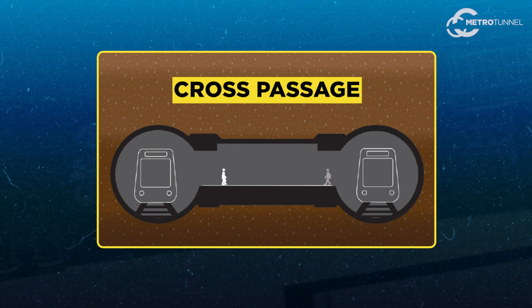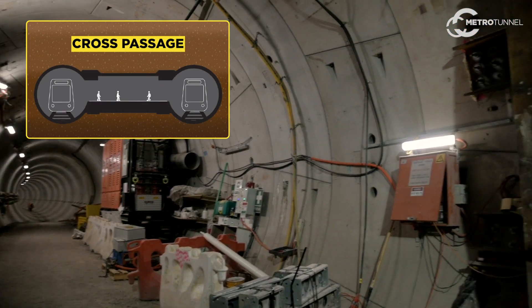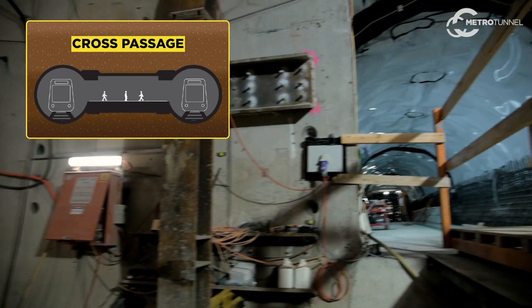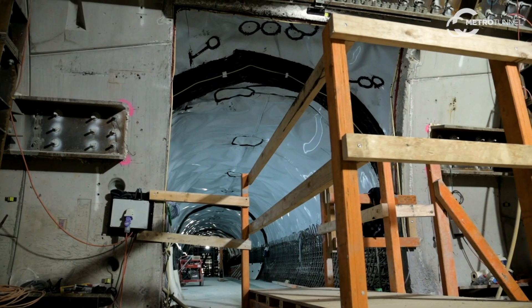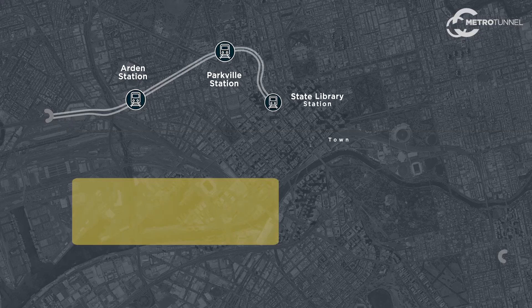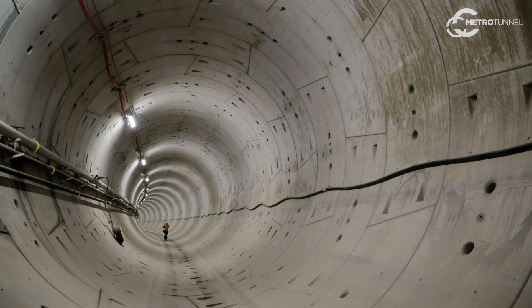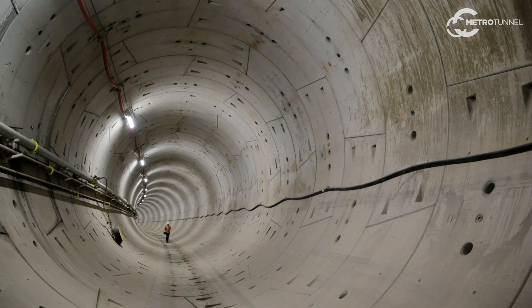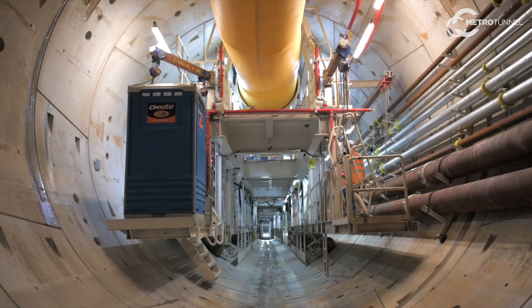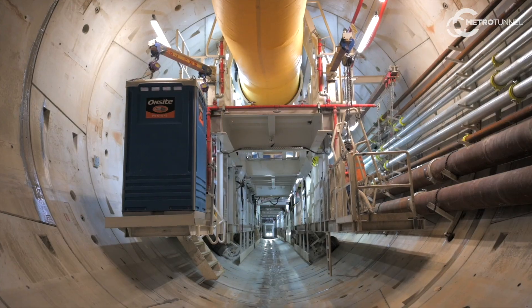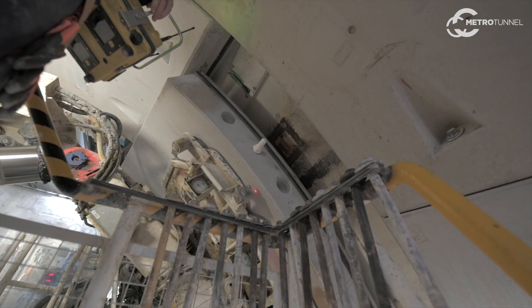Cross passages are small connecting tunnels between the two primary tunnels. They're used for emergency evacuation purposes and are located approximately every 220 metres. Cross passages are constructed after the TBMs have constructed the primary tunnel and the segmental lining is installed.